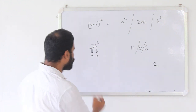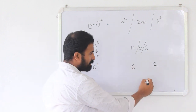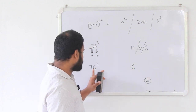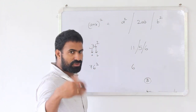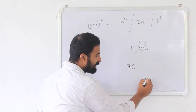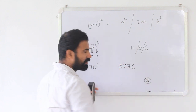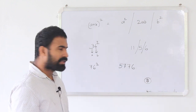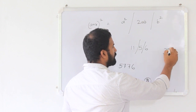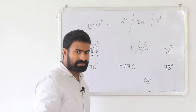Let's take another example: 76 squared. First step, 6 squared is 36, write 6 and carry 3. Second step, 7 into 6 is 42, doubled is 84, plus carry 3 is 87, write 7 and carry 8. Third step, 7 squared is 49 plus carry 8 is 57. That's the answer: 5776. Now let me ask you to try 37 squared and 73 squared.